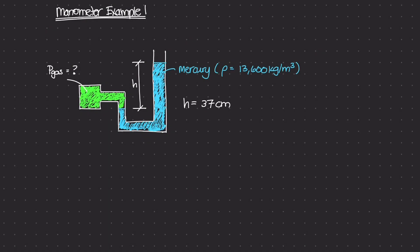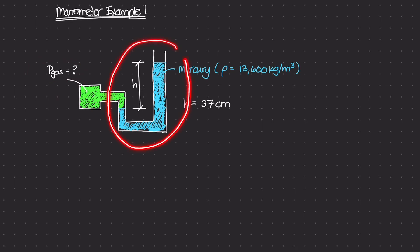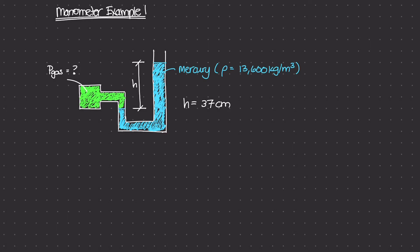This is going to be our first example on manometers and using manometers to measure the gas pressure inside of some kind of a chamber. Now remember, manometers are simple devices where you can fill up a tube with some sort of known liquid and use its hydrostatic equilibrium state to essentially determine what the pressure in a certain chamber is that's filled with gas.